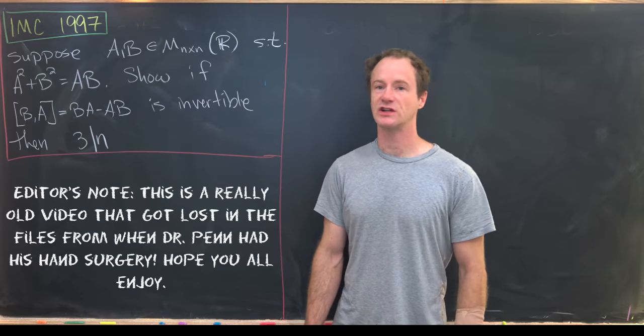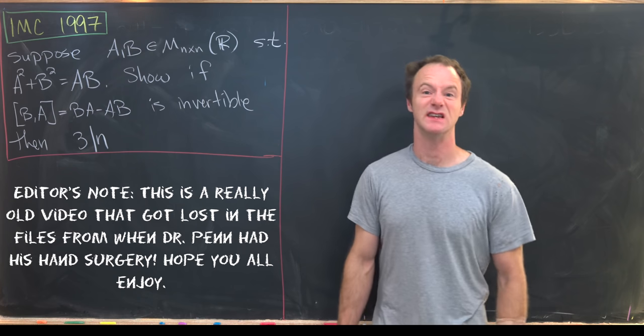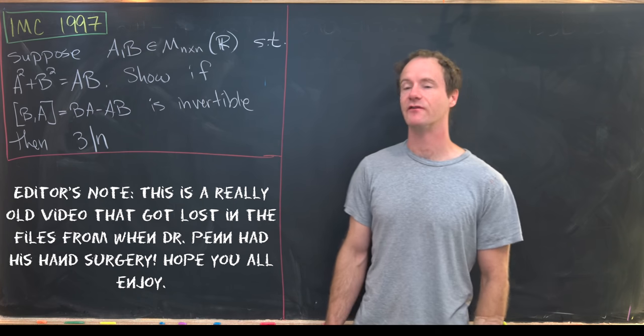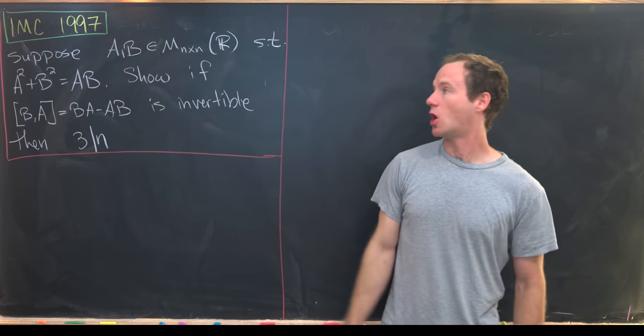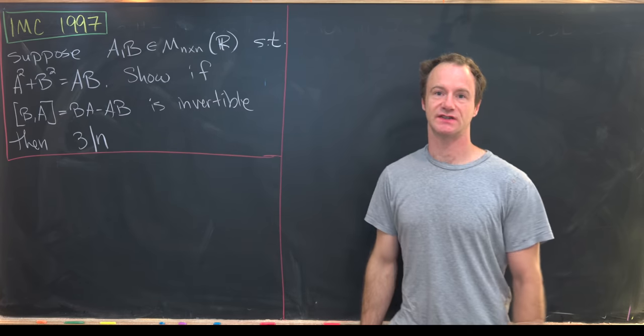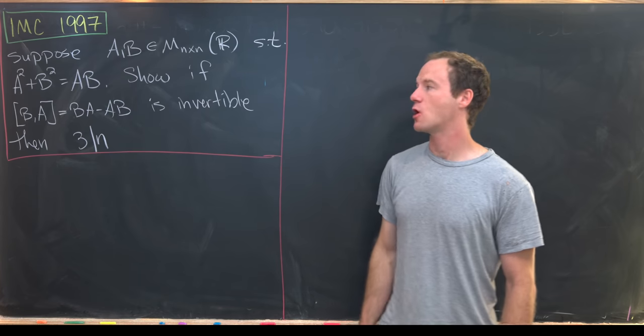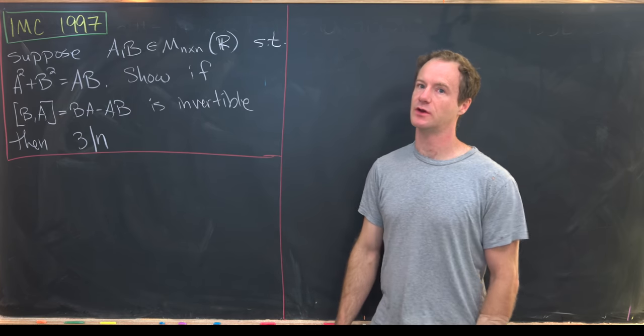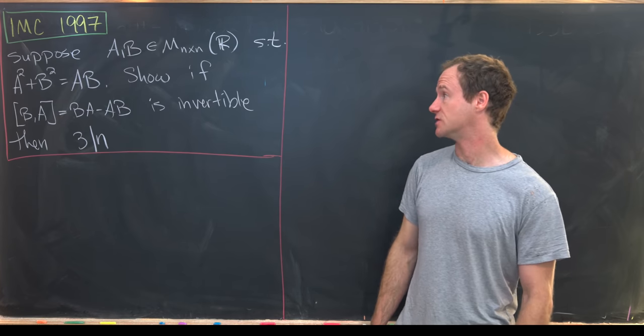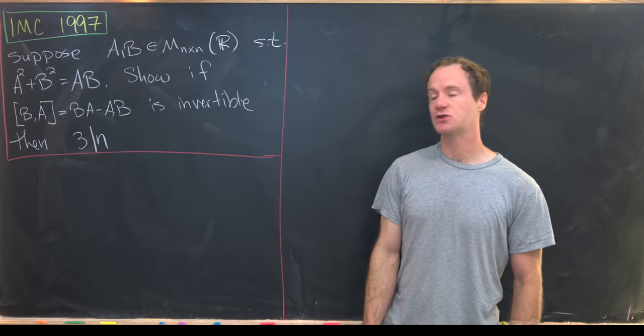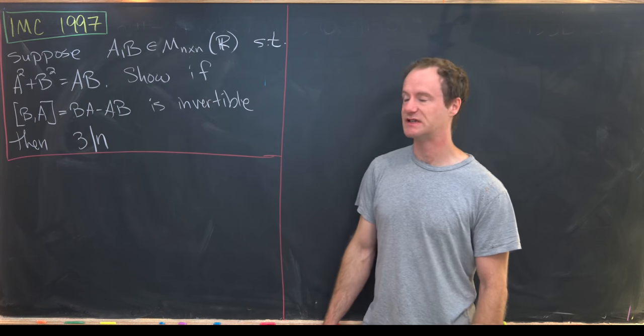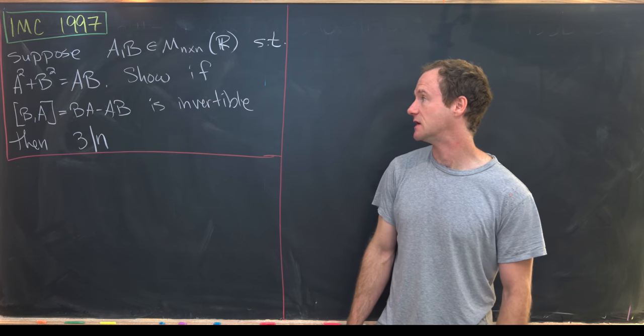Here I've got a really cool linear algebra problem from the IMC. The year was 1997. So we want to suppose that A and B are two n by n matrices with real coefficients. It's really important to notice here that these have real coefficients. And they satisfy the following equation: A squared plus B squared equals A times B.